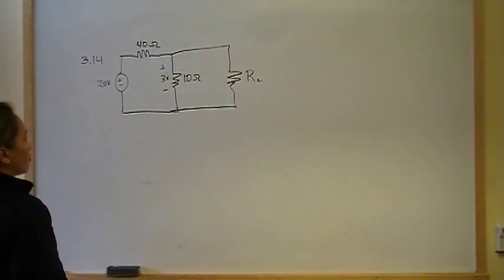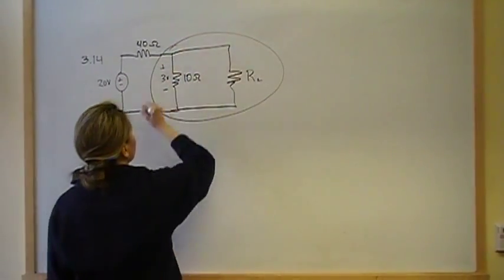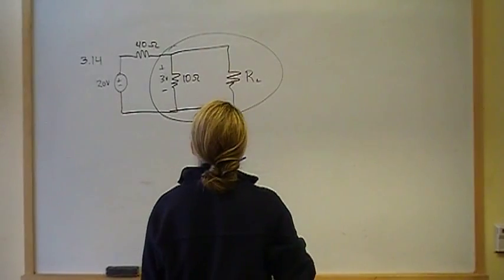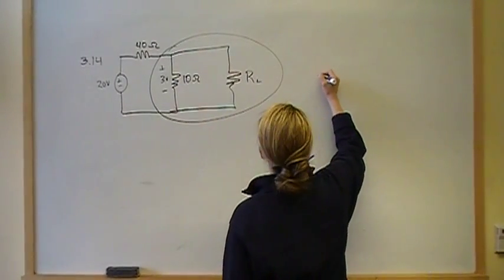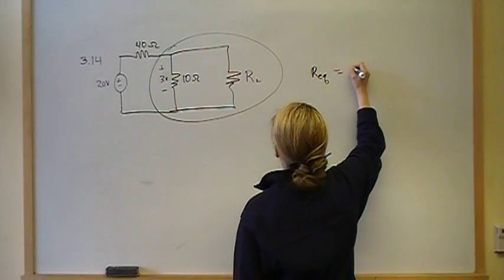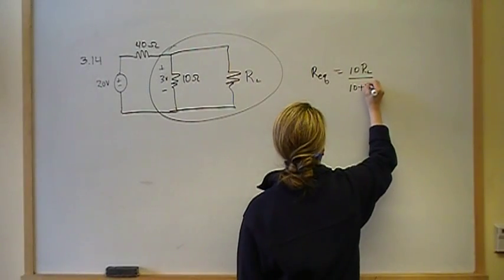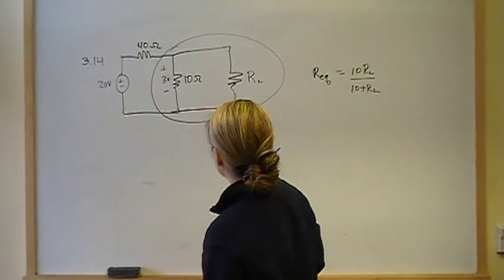So, what is RL? Well, to solve this, we're going to replace this with its equivalent resistance. So, then this is going to be REQ. It's going to be 10 times RL over 10 plus RL. That's our REQ.